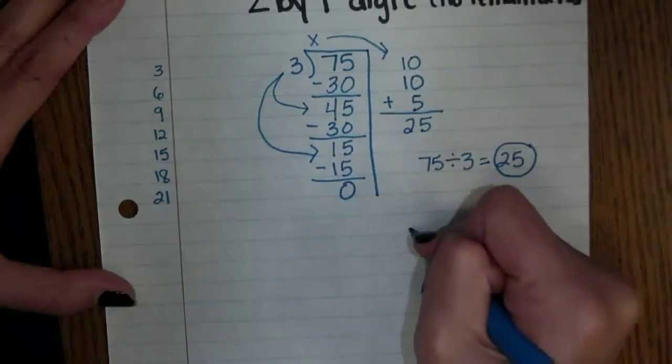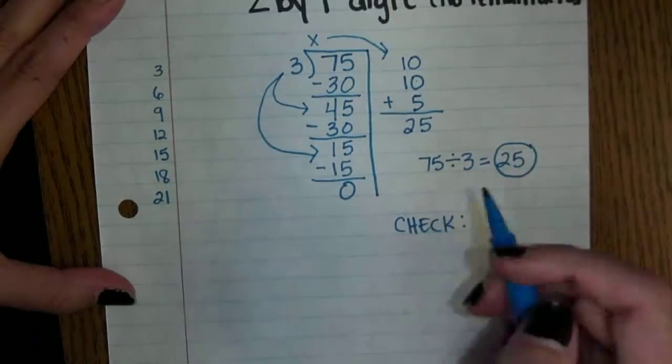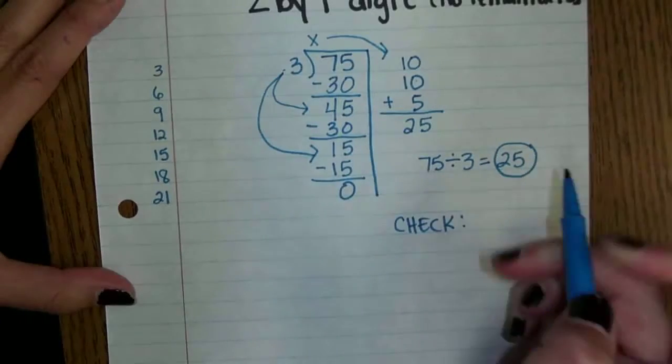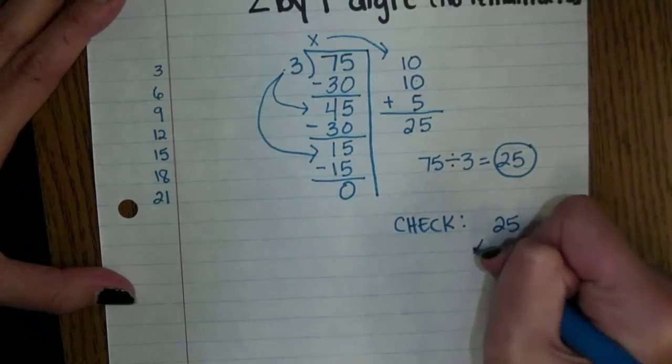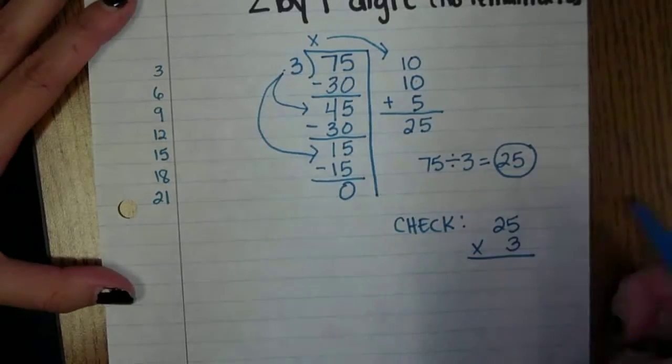Students do know how to check their work and we're going to write our check and we're going to do 3 times 25. We can always use multiplication to check our work and we should get our answer to be 75.